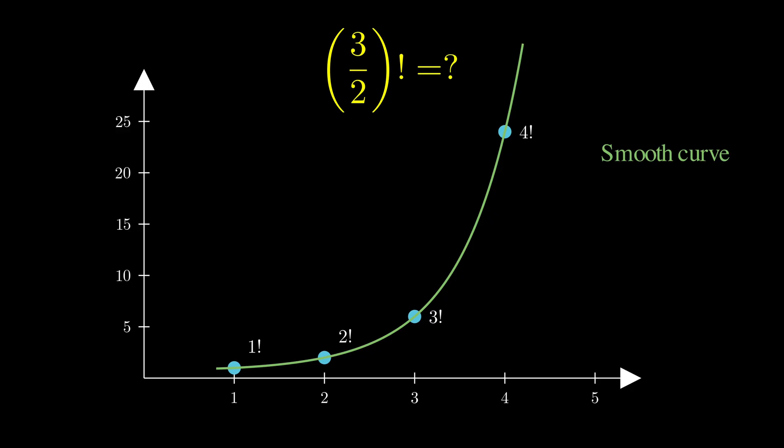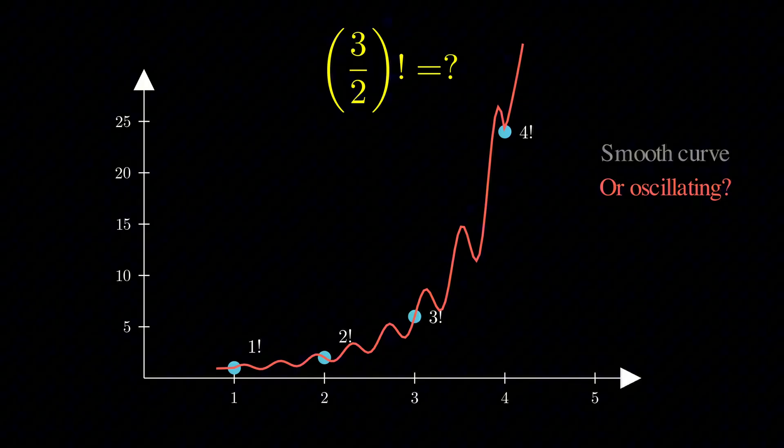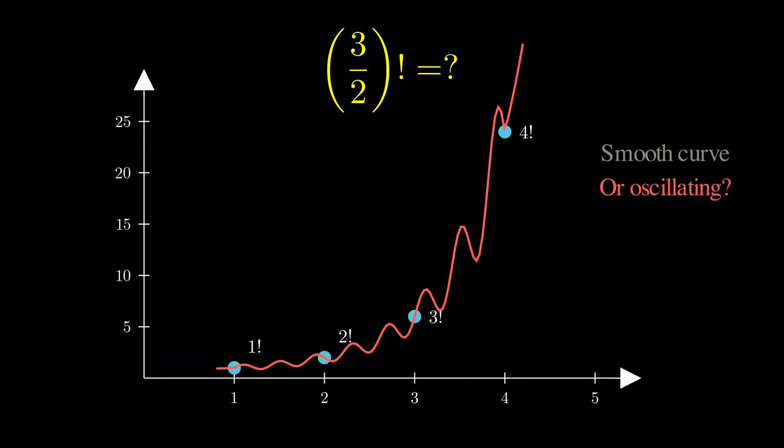Now you might think, well, I could draw any curve I want through those points, and you'd be right. I could draw a nice smooth curve, or I could make it wiggle and oscillate between the points while still hitting each factorial value exactly.